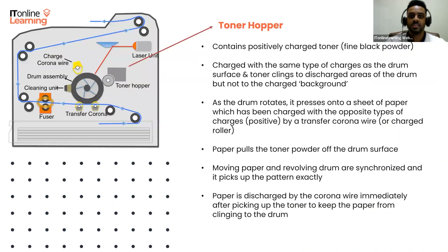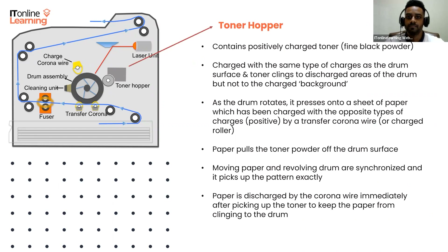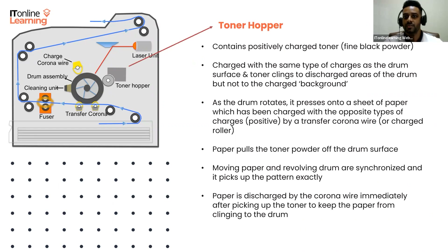Next to the laser unit is the toner hopper, which contains the positively charged toner — a fine black powder. Since it's charged with the same type of charges as the drum surface, the toner clings to the discharged areas of the drum, but not to the charged background.